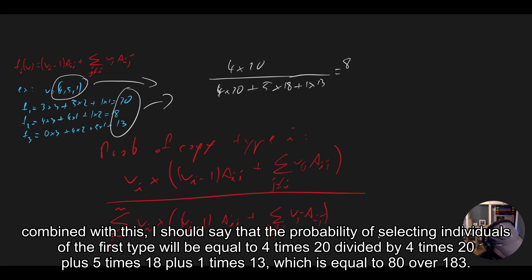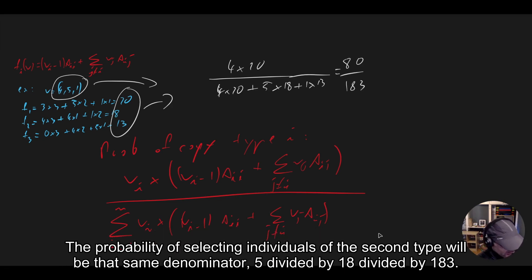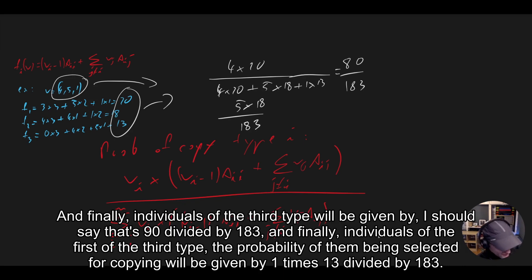which is equal to 80 over 183. The probability of selecting individuals of the second type will be that same denominator, 5 times 18 divided by 183.